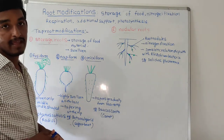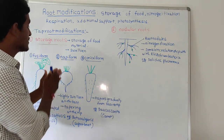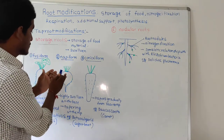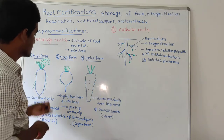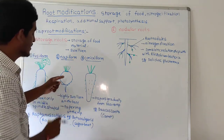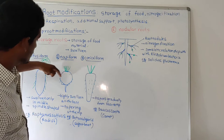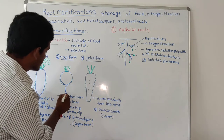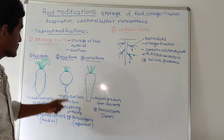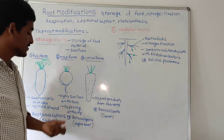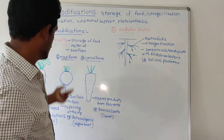The next type is napiform. It also helps in storing food material, but the storage takes place mainly at the base — it is highly swollen at the base. The tip, however, is tapering. That shape is called napiform. Example: Beta vulgaris — sugar beet or beetroot.